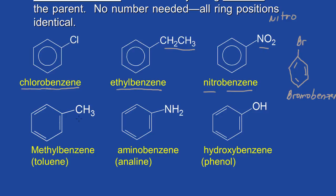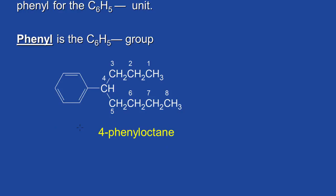Here we have a benzene ring with a methyl group. The IUPAC name is methylbenzene, but the common name is toluene — in fact, even if I order it from Fisher Scientific, it is listed as toluene. This group, the NH2 group, is an amino group, so this would be called aminobenzene. Make sure that you know the amino group and the nitro group. Here we have a benzene ring with a hydroxyl group — we call this hydroxybenzene; that's the IUPAC name, and the more common name is phenol. Practice naming these compounds.